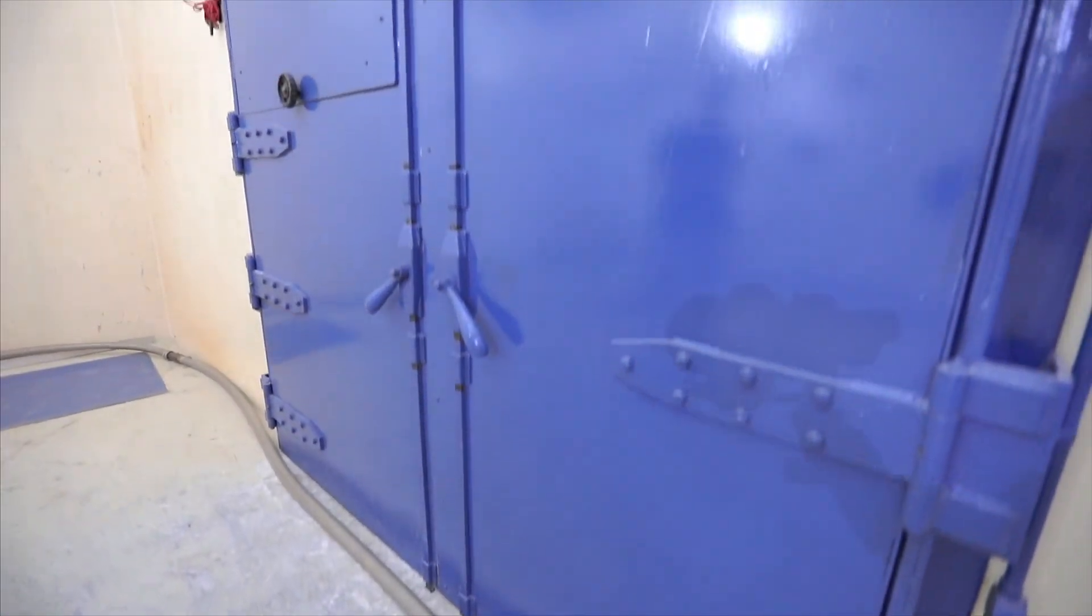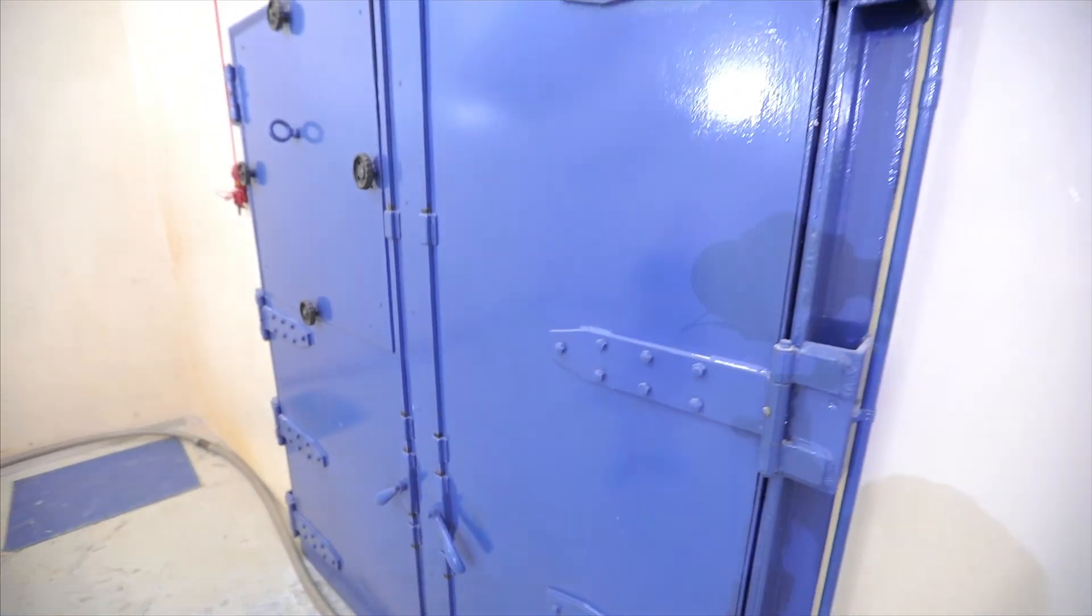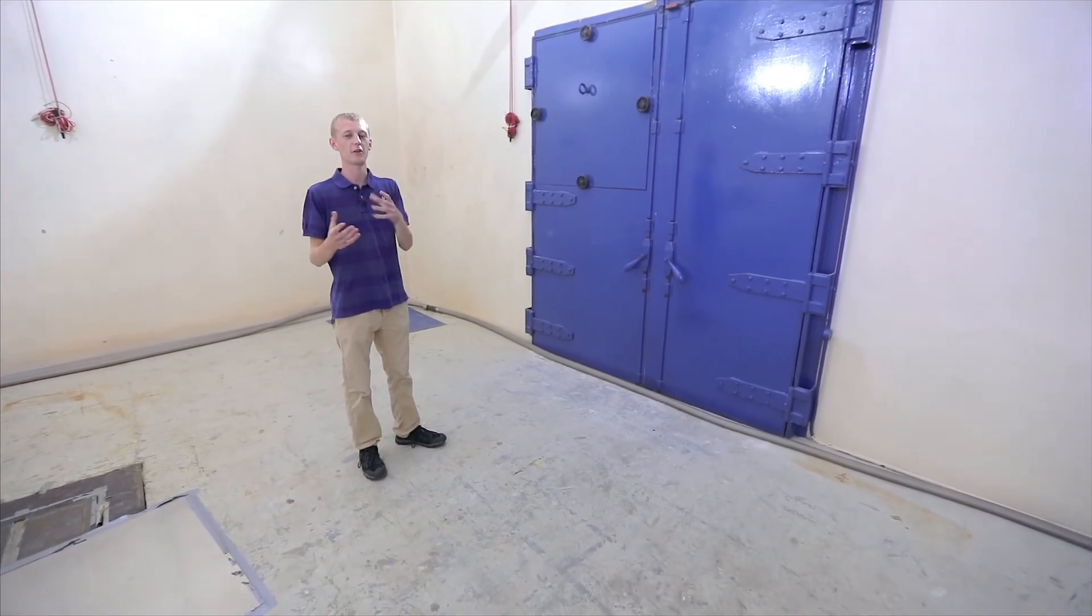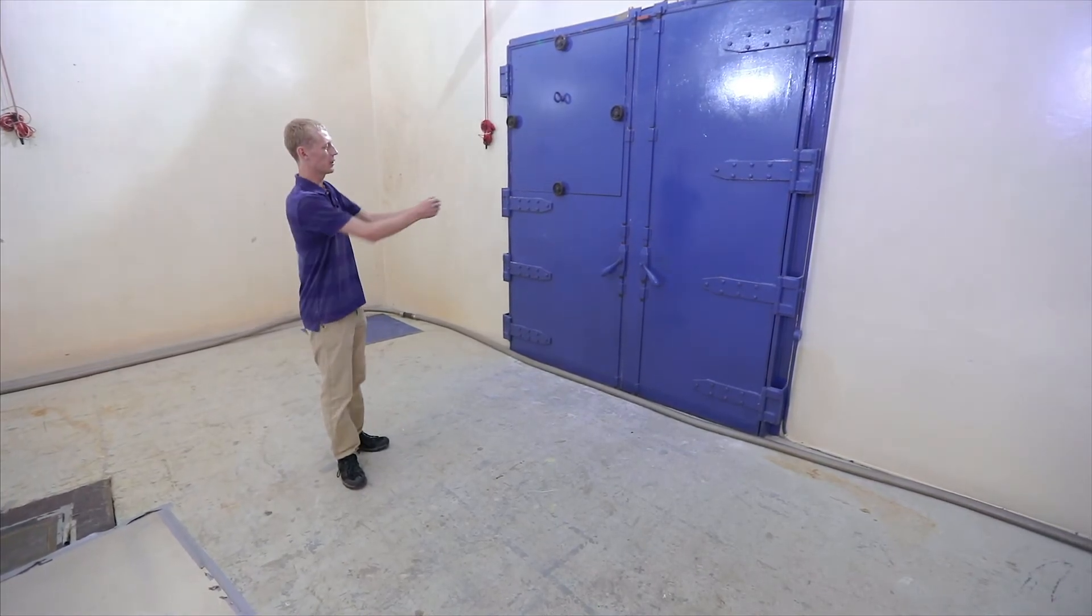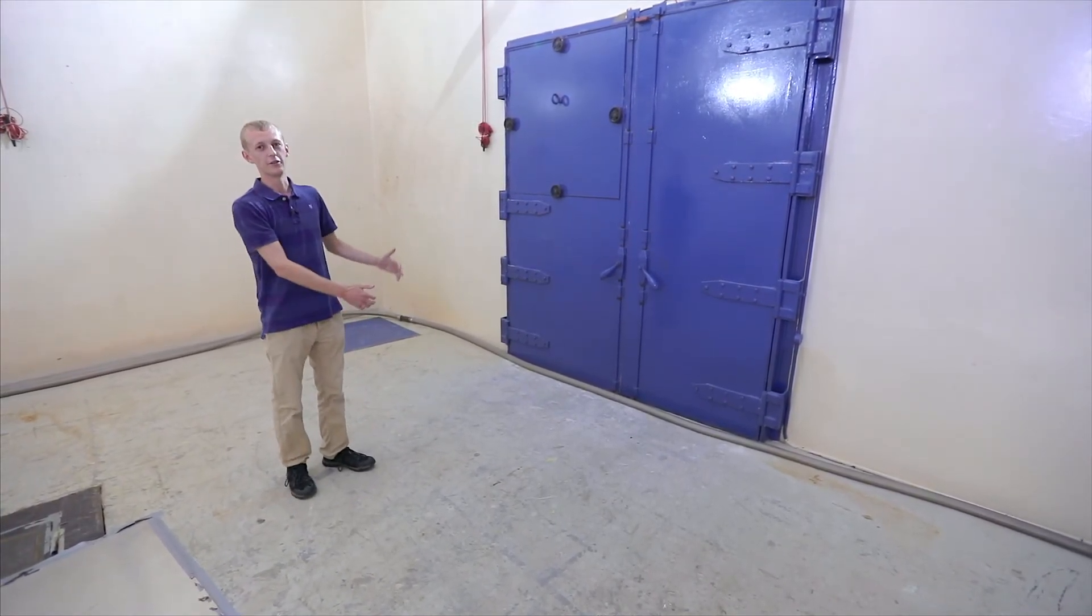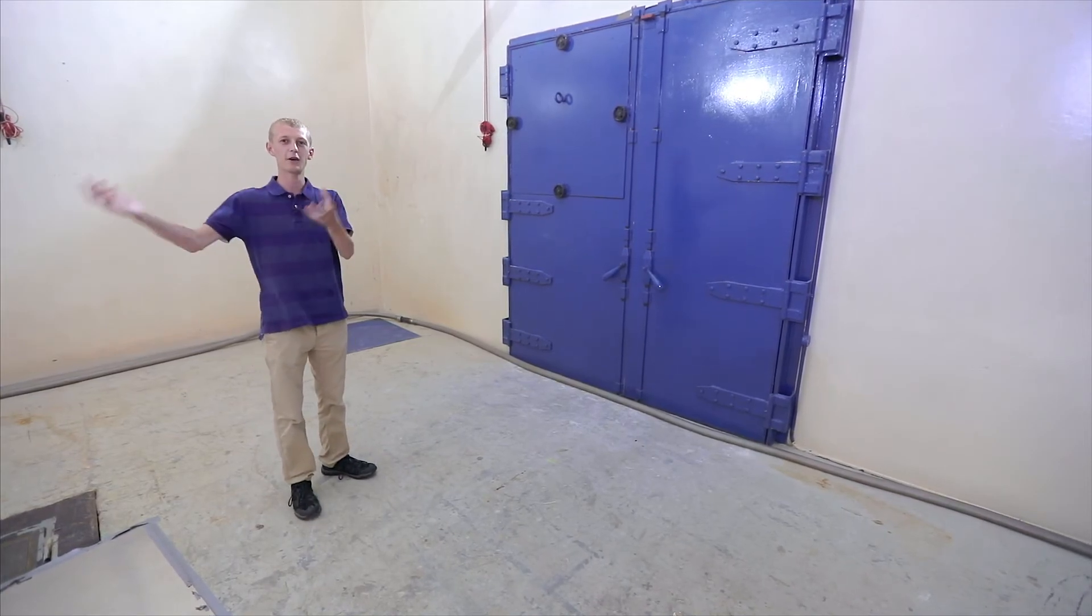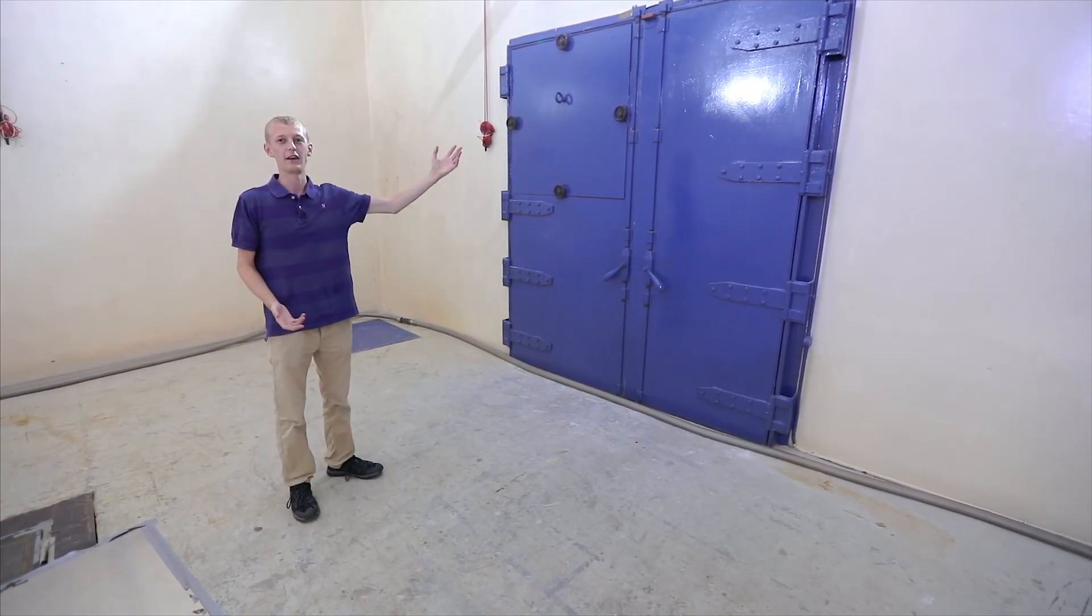Through these big bomb doors is another reverberation chamber, and we can use the two coupled spaces to test the transmission properties of different materials. We can open up these doors and build a wall or place a window in this gap and make a loud sound in here and then measure it in the other room.